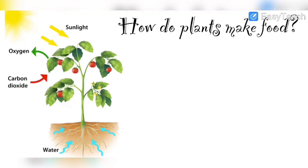Now we need to know the recipe for making the food. We have gathered all the materials, and now we need the recipe. Just as we all make and eat food, plants also need food. They have gathered all the stuff they need, and now they need to know the recipe — so let's learn the recipe for the plant's food.